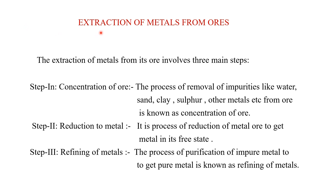Now let us see how the extraction of metal occurs from ores. The extraction of metal from its ore may involve three steps. The first step is concentration of ore. In this process, impurities like water, sand, clay, sulfur, and other substances present in the ore are removed. These ores are found in the earth's crust associated with such impurities, and the process by which these impurities are removed is known as concentration of ore.